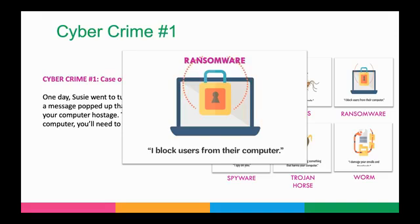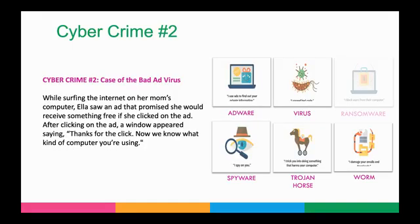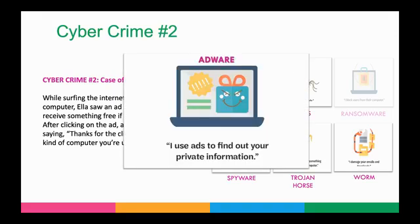Cyber crime question number two: the case of the bad ad virus. While surfing the internet on her mom's computer, Ella saw an ad that promised she would receive something free if she clicked on it. After clicking, a window appeared saying 'Thanks for the click — now we know what kind of computer you're using.' The answer is adware — I use ads to find out private information. Again, I'll say this over and over: if you're online and it looks too good to be true, it's too good to be true.